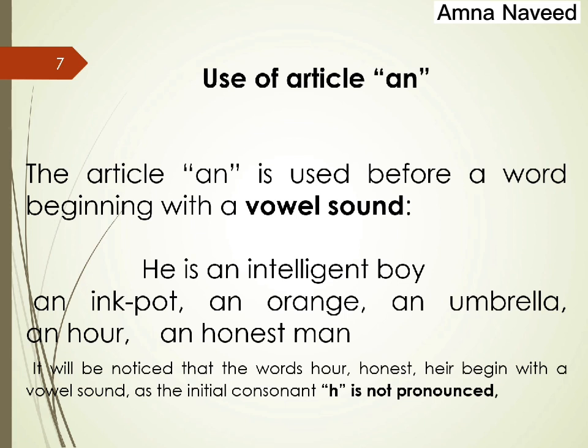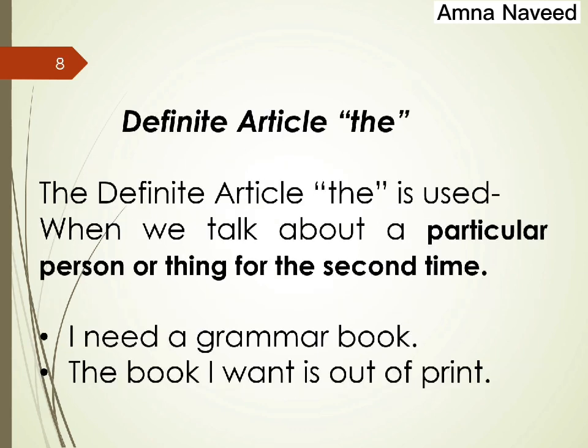The article 'an' is used before a word that begins with a vowel sound. For example: 'He is an intelligent boy,' 'Please give me an ink pot,' 'This is an orange,' 'an umbrella,' 'an hour,' 'an honest man.' All words that start with a vowel sound take the article 'an'. Now let's look at the definite article 'the'.